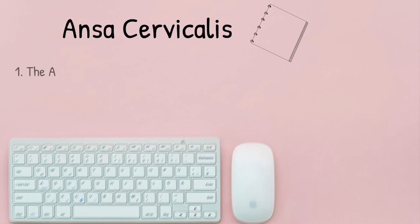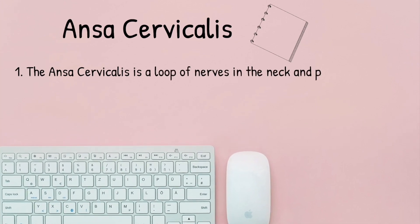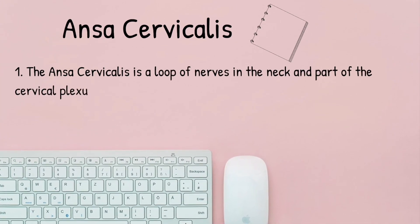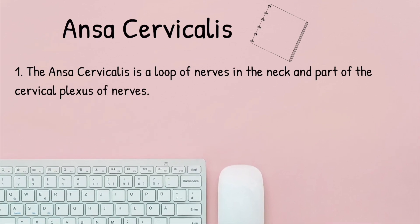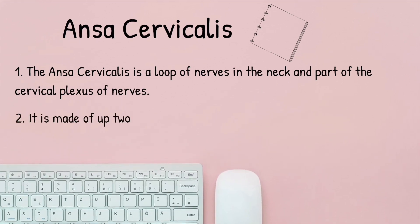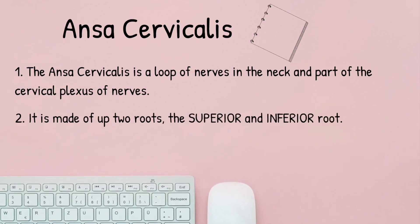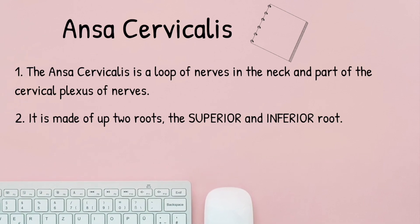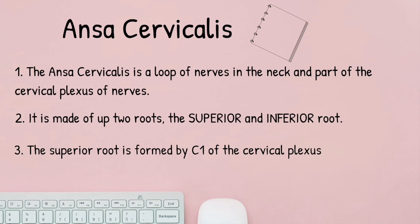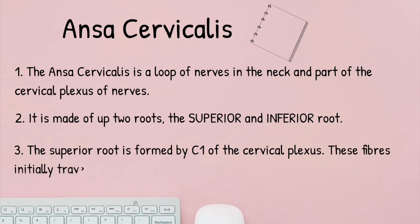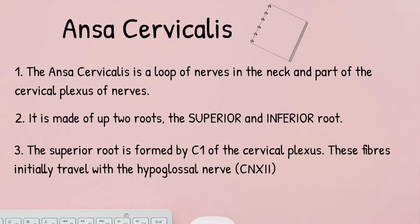The important things to remember are: firstly, the Ansa Cervicalis is a fancy word to describe a loop of nerve fibers in the neck. It can be simplified into two main parts — the superior root and the inferior root. The nerve fibers that make up the Ansa Cervicalis come from different nerves: the superior root is made up of fibers from C1 and travels with the hypoglossal nerve to reach the neck, while the inferior root is made up of fibers from C2 and C3 spinal nerves.